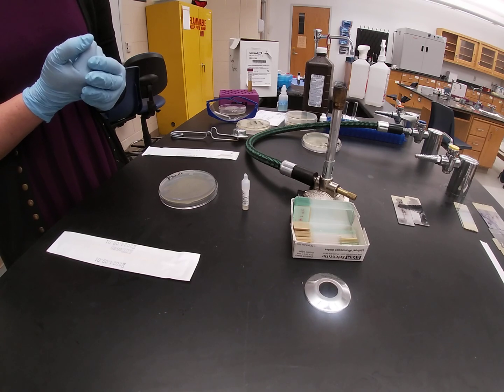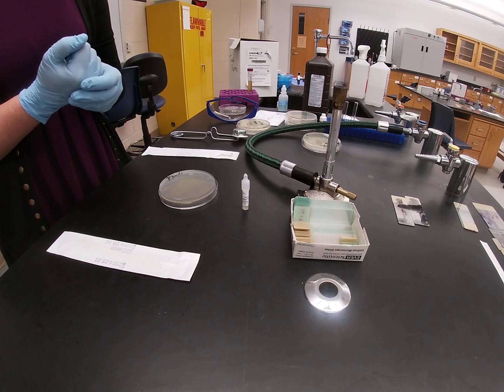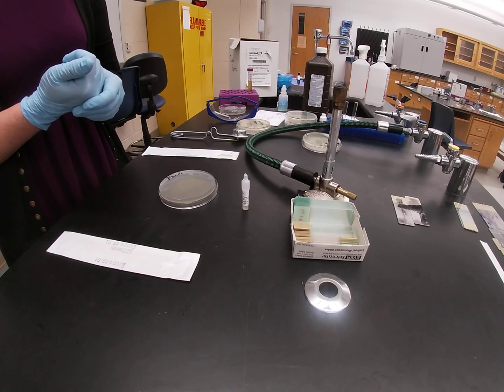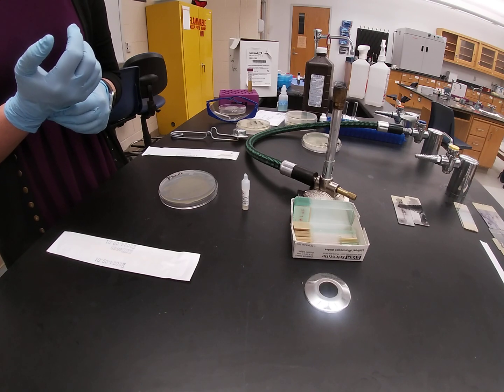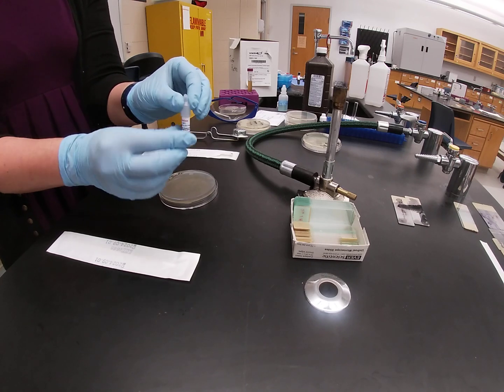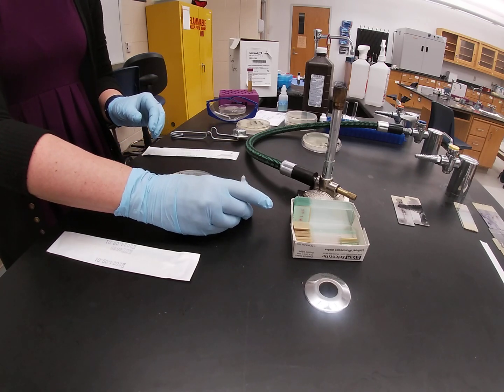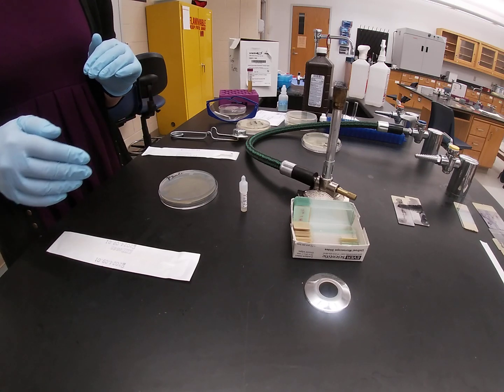The oxidase test looks for the presence of the protein cytochrome oxidase, which is an important protein of the electron transport chain of some bacteria. The oxidase test uses a chromogenic reducing agent. When the oxidase reagent becomes reduced, which happens when cytochrome oxidase is present, it will change colors into a dark purple color.